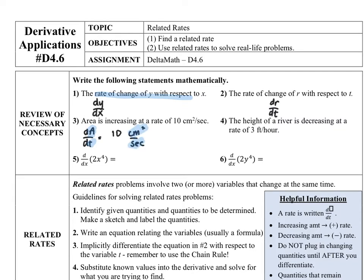Notice the units — when your units are the rate of change of area over time, you need an area unit over a time unit. Review question four: the height of the river is decreasing at a rate of 3 feet per hour. I'm going to use h to represent height over time. When a rate is decreasing, it's going to be negative, so this would be negative 3 feet per hour. If you have dH over dt, your units need to represent that as well — feet per hour, because feet is your height over your time measured in hours.